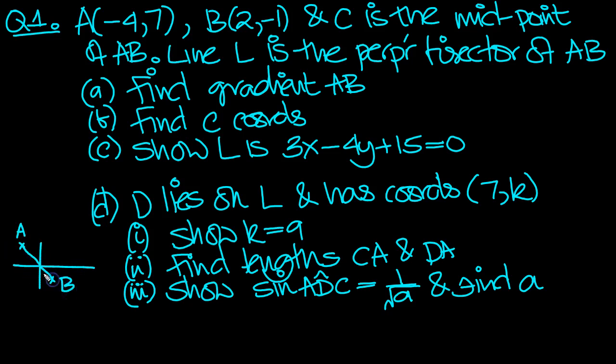And there's the line AB. We don't know if it goes through the origin. Line L is perpendicular bisector. So here's line L. Okay, let's have a go at it.